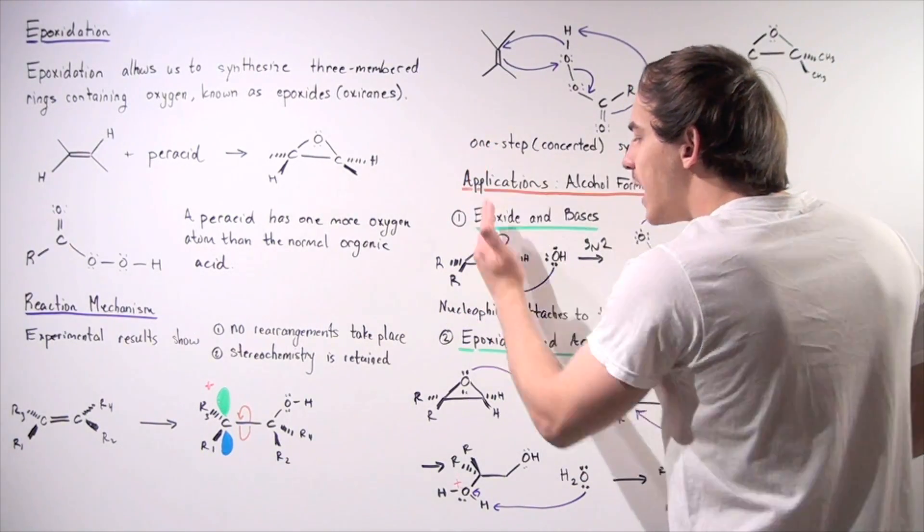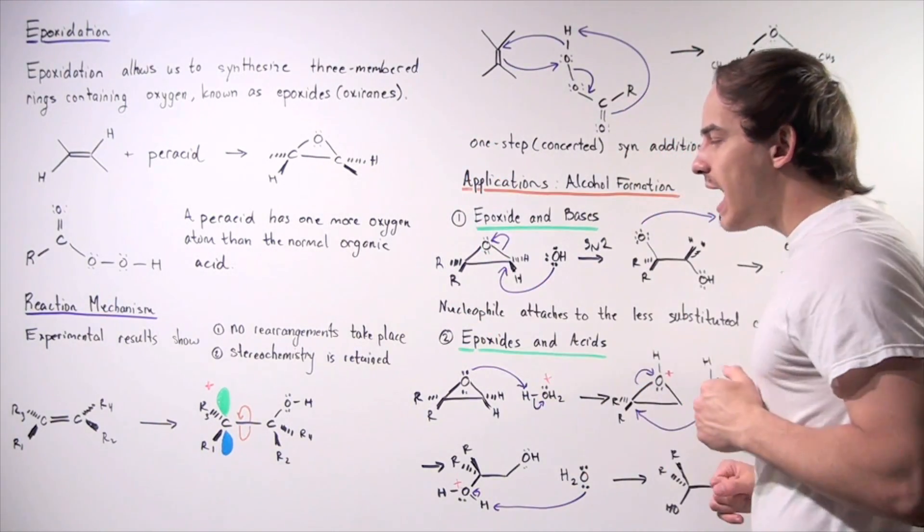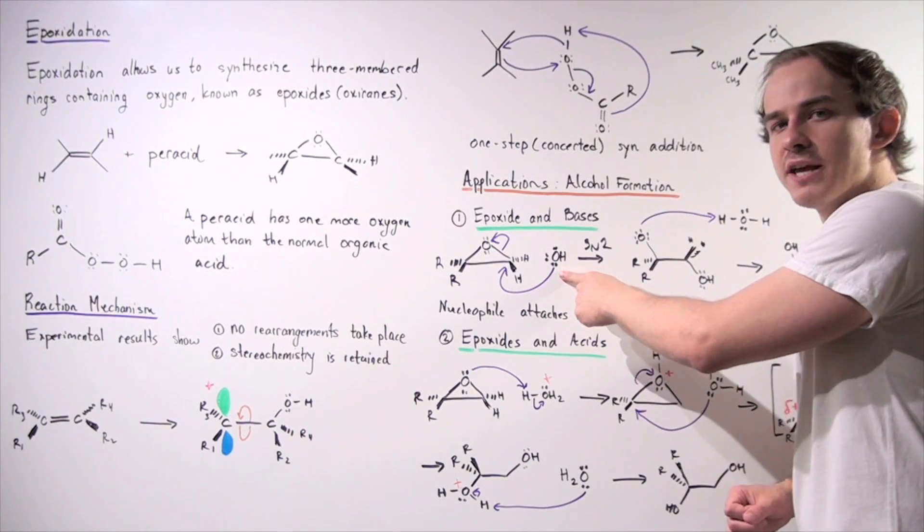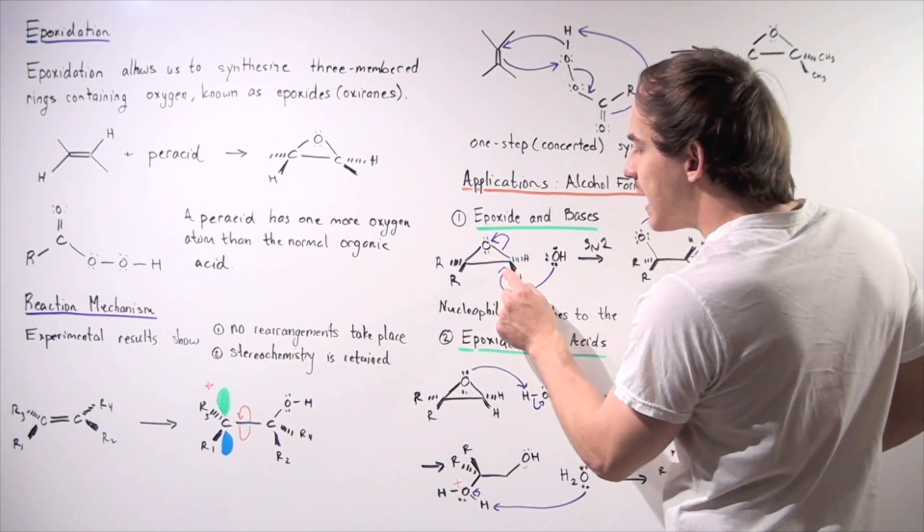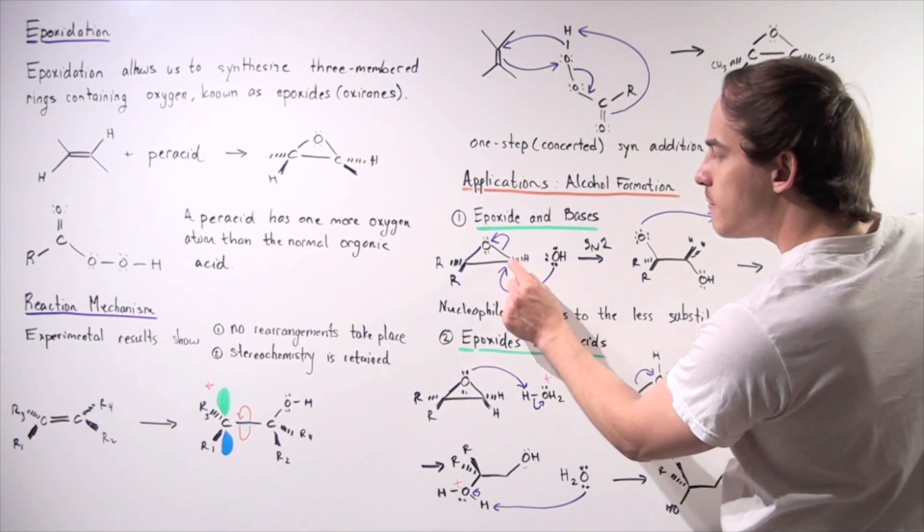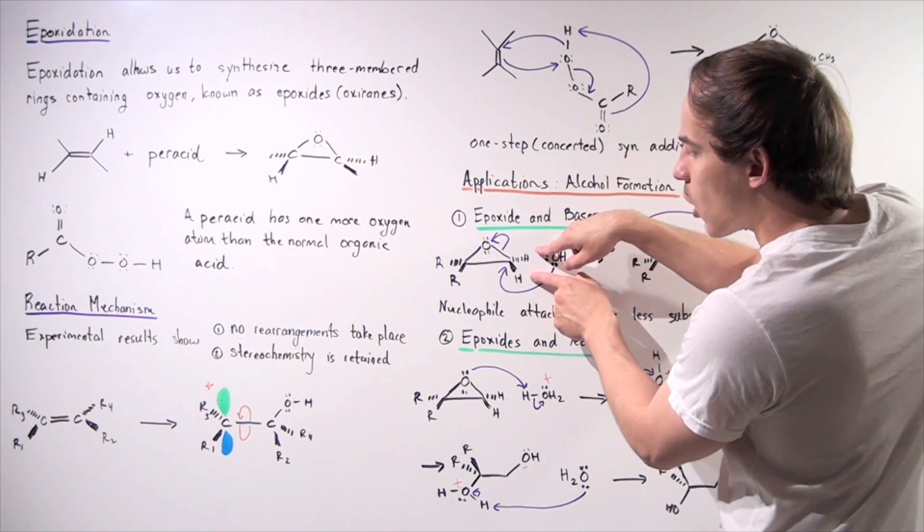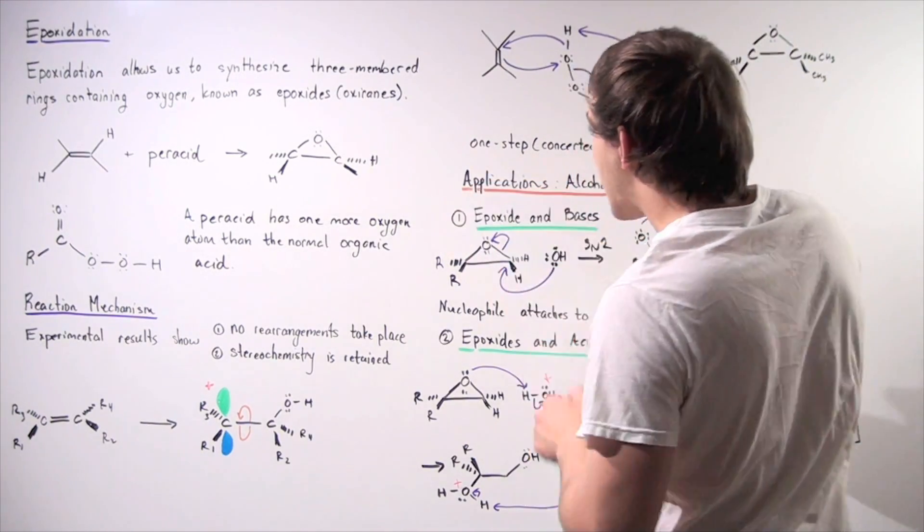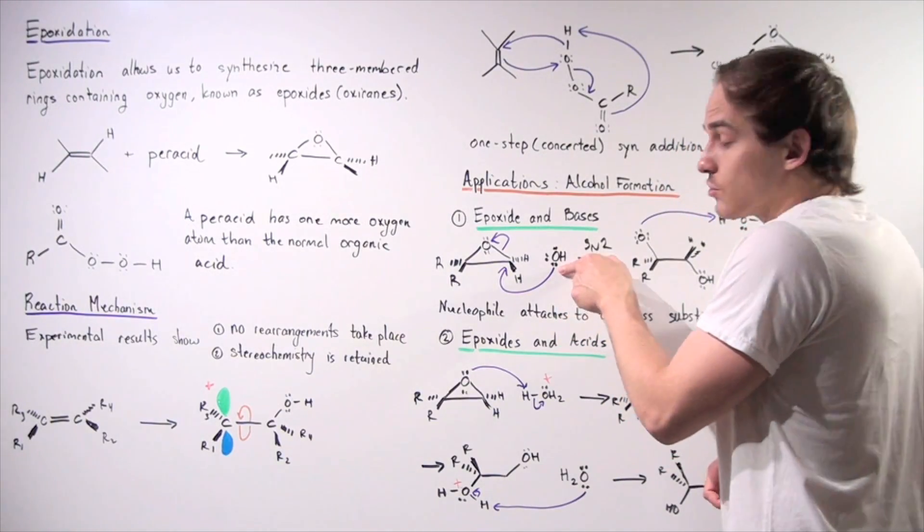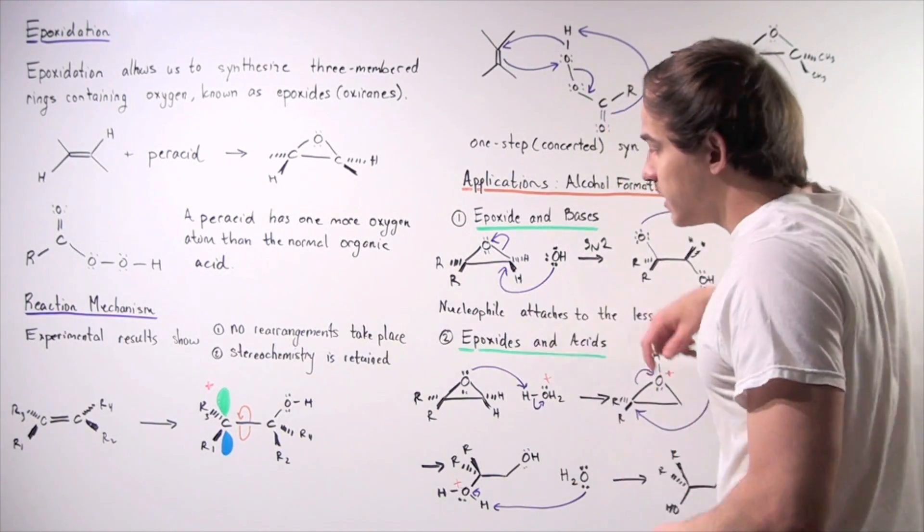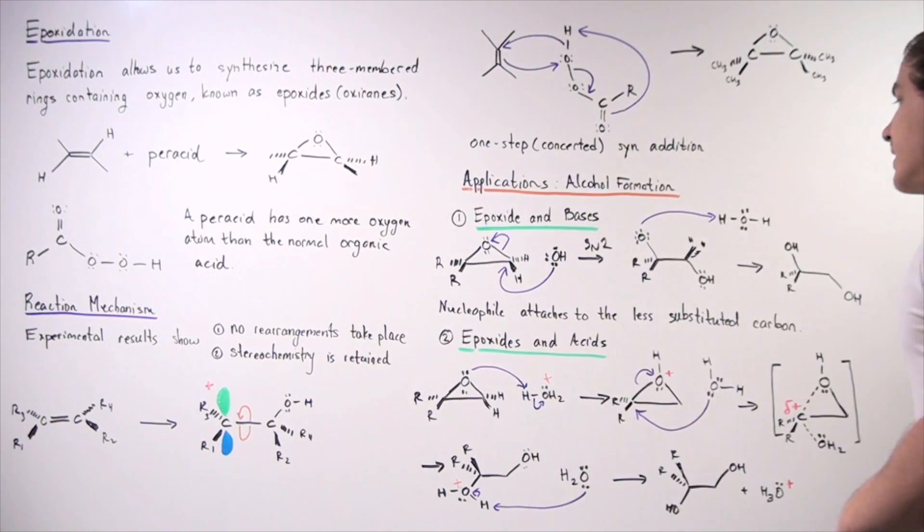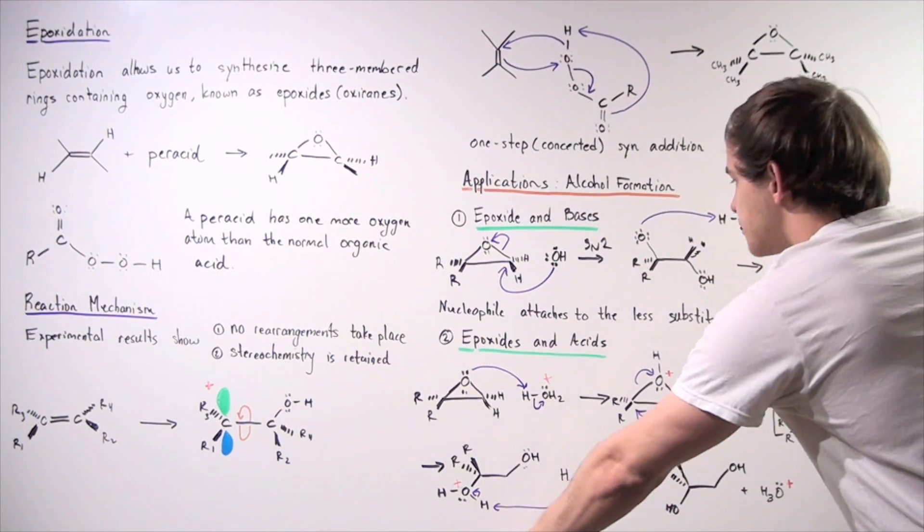So if we have the following asymmetrical epoxide, this nucleophile will attack from the less sterically hindered side, from this side to this carbon, because these two H groups are smaller than these two R alkyl groups. So this lone pair of electrons will attack this carbon, this place, and this bond.